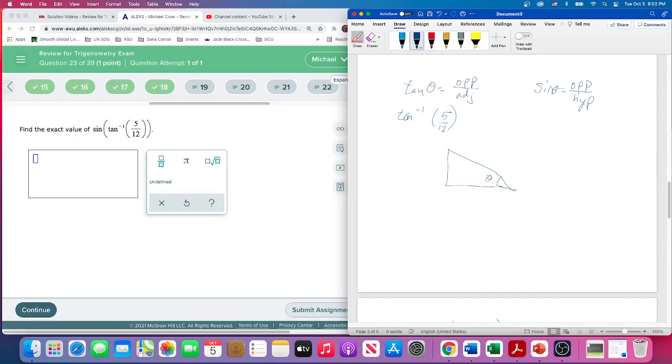This is some theta. So the opposite is 5, the adjacent is 12, and then we need to find the hypotenuse.